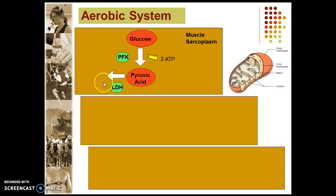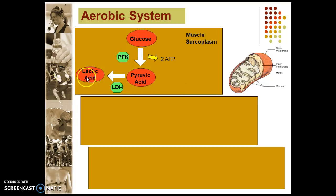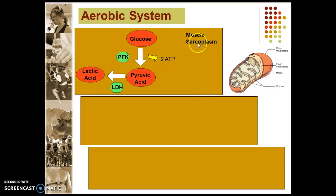The big change comes here. I've put this on so you can see how it differs. When glucose is broken down by PFK it is converted into pyruvic acid. Because oxygen is present, LDH is not stimulated and lactic acid is not produced — there is no OBLA. That is stage one, called aerobic glycolysis. Aerobic glycolysis takes place in the muscle sarcoplasm.